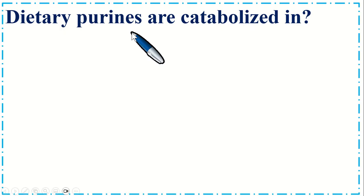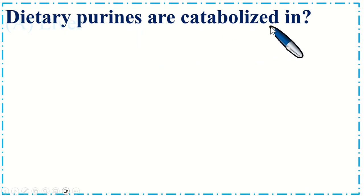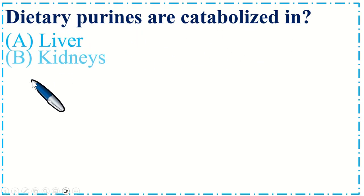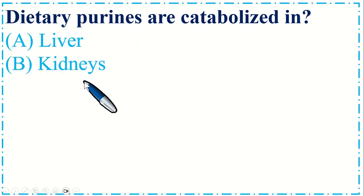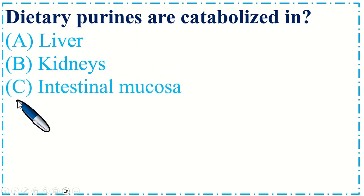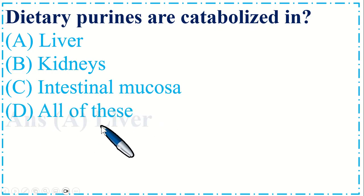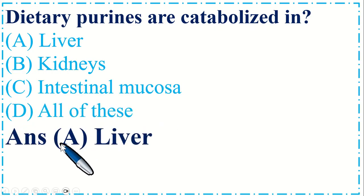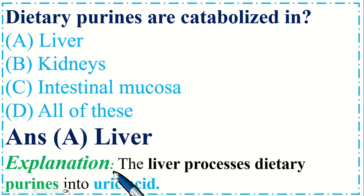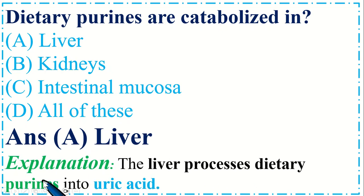Dietary purines are metabolized in: A. Liver, B. Kidneys, C. Intestinal mucosa, and D. All of these. The correct option is A, Liver. Explanation: the liver processes dietary purines into uric acid.